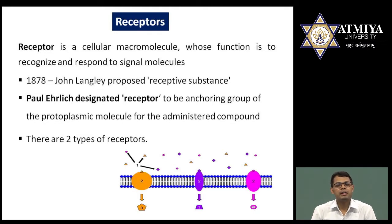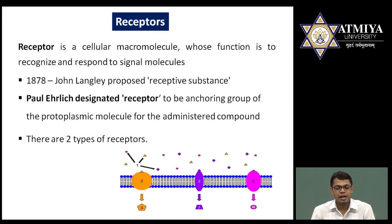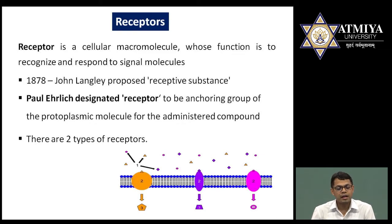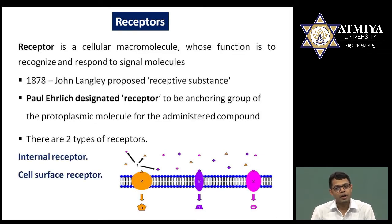Langley used the term 'receptive substances.' The details of the receptor concept were given by Paul Ehrlich, who said that receptors are located on the membrane and respond to signal molecules, and hence the signal transduction process occurs. There are two types of receptors: one is internal receptor and the second is cell surface receptor.